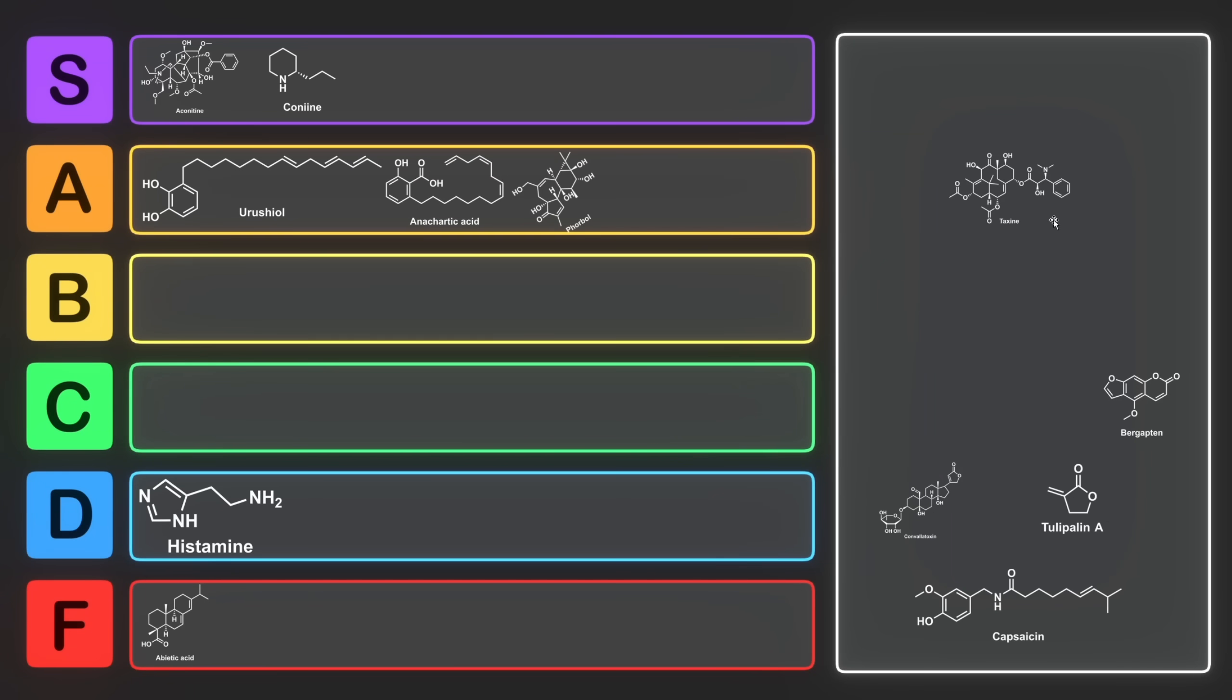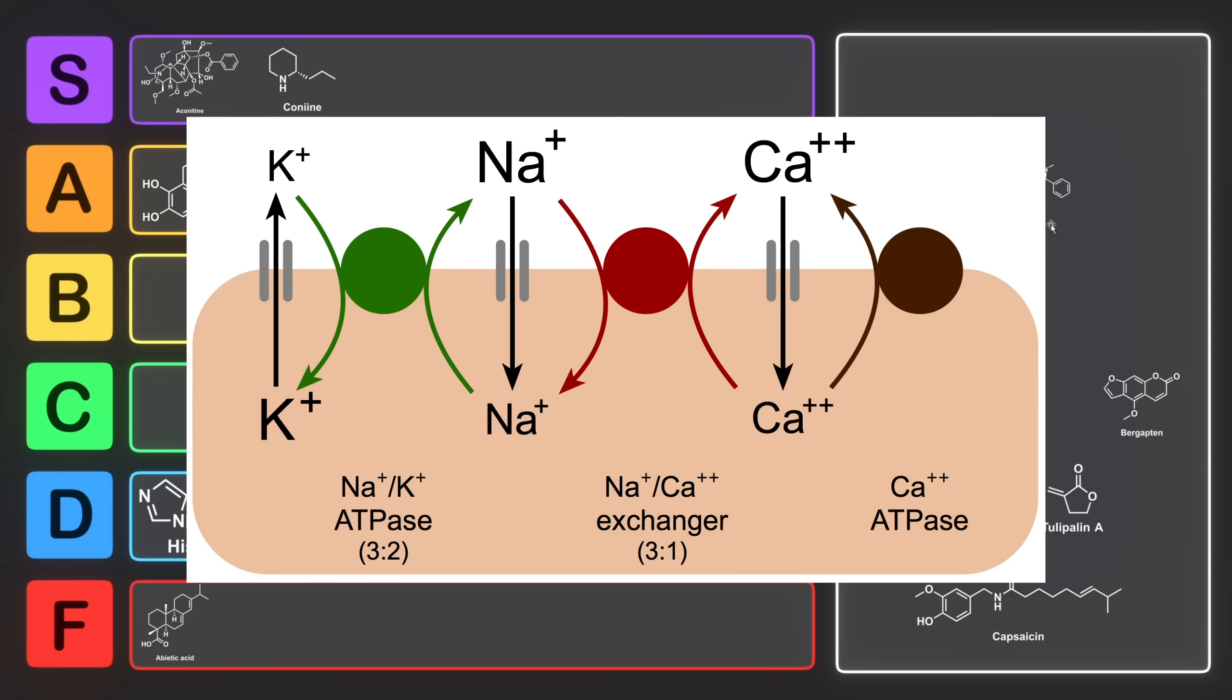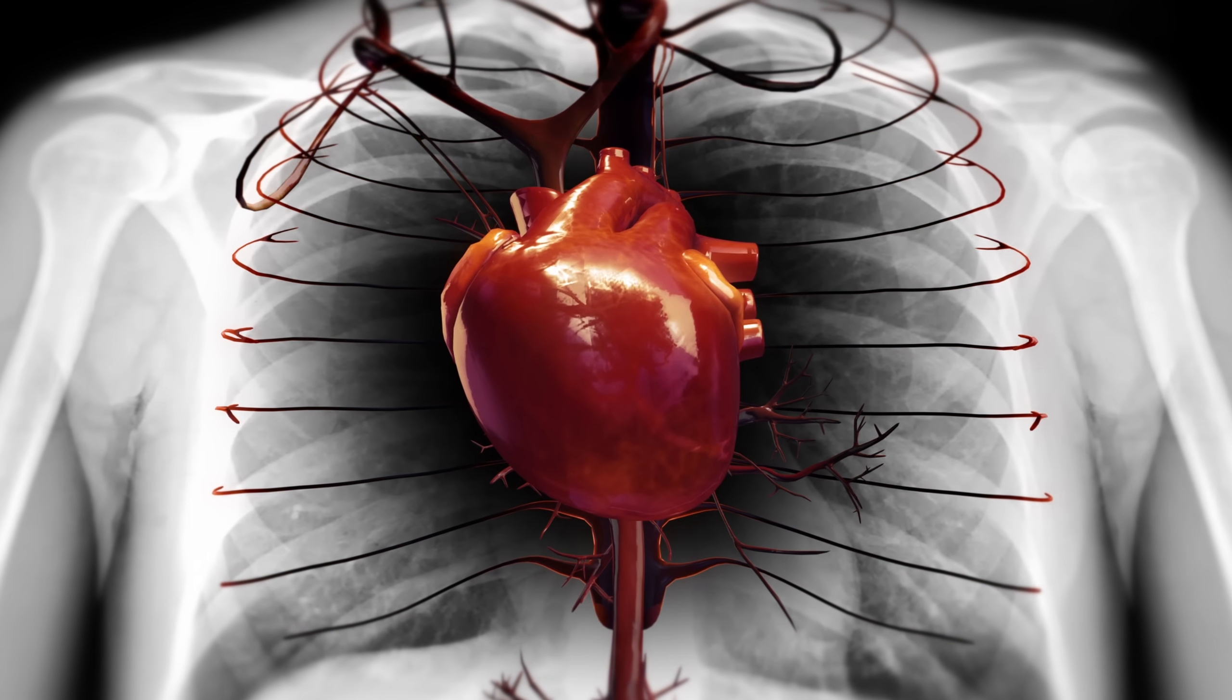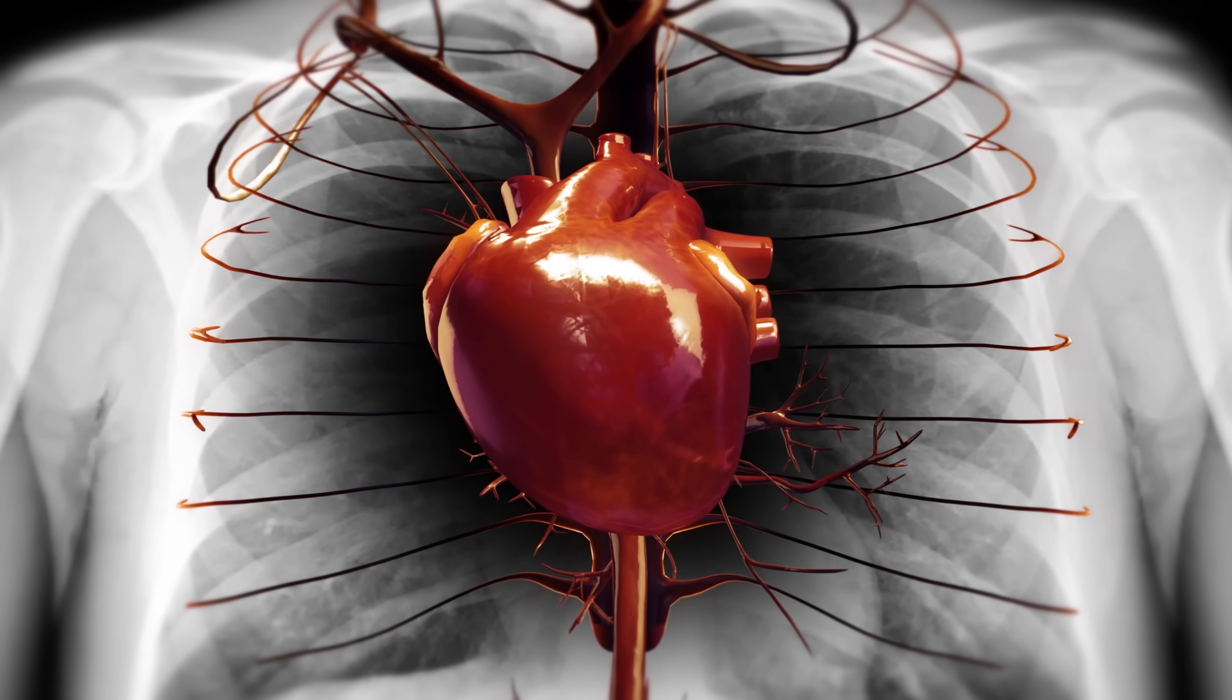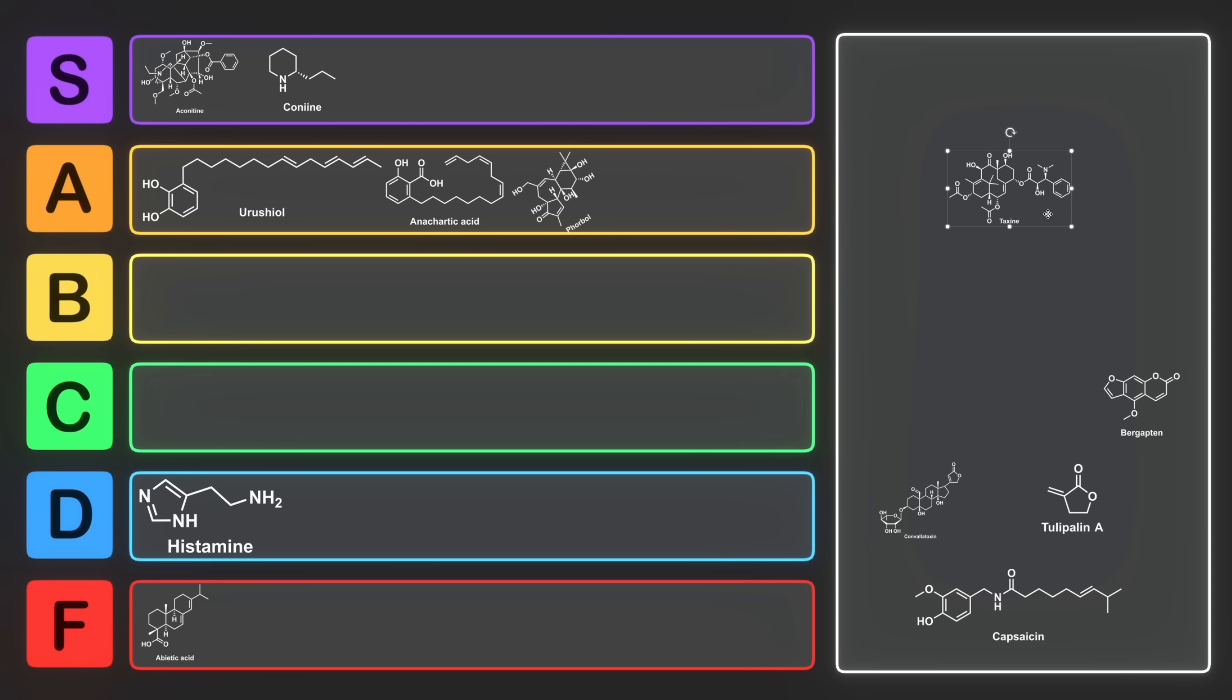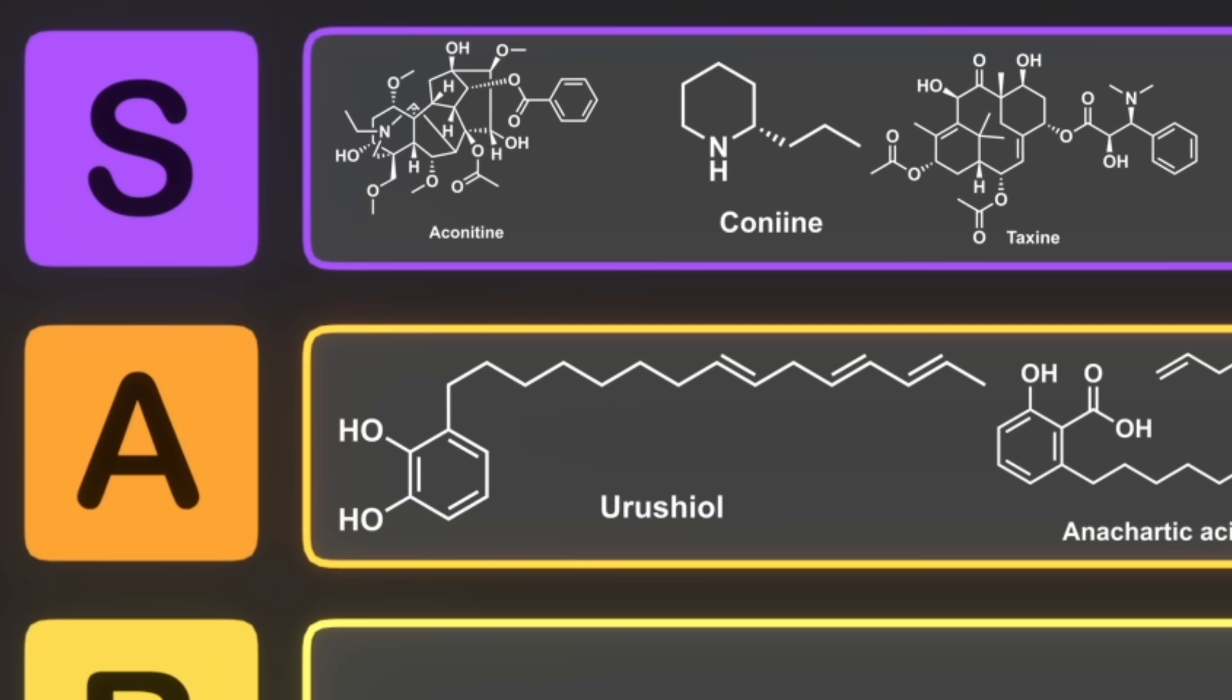Once in the body, taxene affects the cardiovascular system, and more specifically, the calcium and sodium ion channels in heart cells. This prevents proper function of heart cells, leading to a dramatically reduced heart rate, arrhythmia, and eventually cardiovascular failure. Having your heart fail is pretty irritating, so we're going to have to put taxene right into S tier. You don't like paying taxes, and you don't like having your heart fail either.